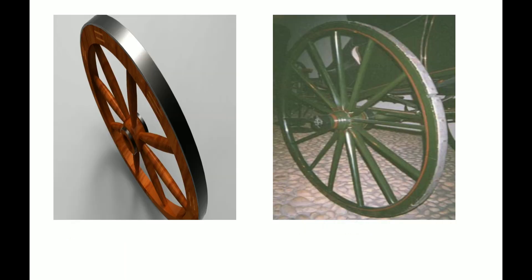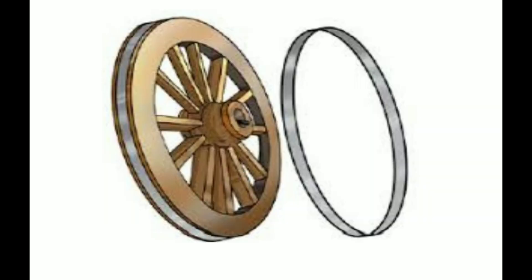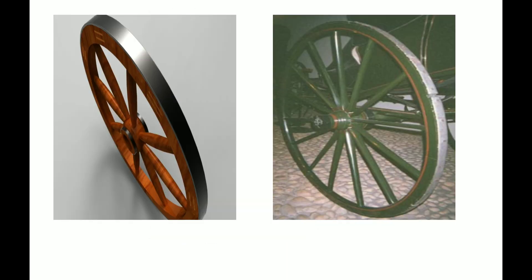The third application: horse carts or bullock carts have wooden wheels. These wheels are fitted with metal rims to provide support and longevity to the cart on rough surfaces. The metal rims are slightly smaller in diameter than the wooden wheel, so the rim is heated so that it expands and fits over the wheel, as shown in this figure. After fitting, cold water is poured on it to allow it to contract and grip the wheel tightly. These bullock carts or horse carts have been used by people for many years.